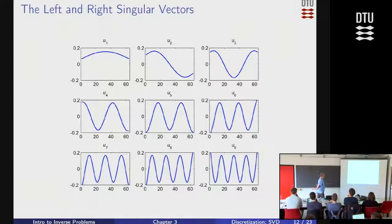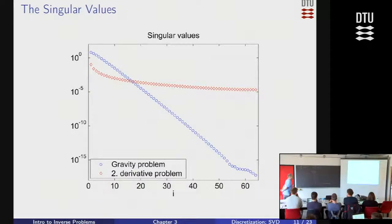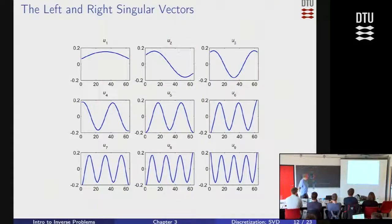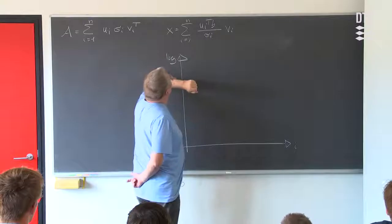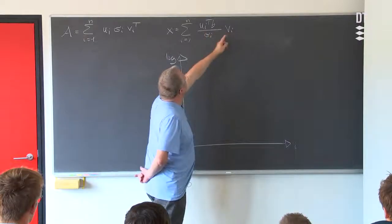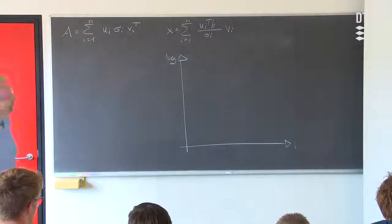As expected, the higher the index, the more oscillations. Higher index is associated with smaller singular values because they are ordered that way, illustrating once again that higher frequencies are damped more in the mapping from X to the right-hand side B, or amplified when you compute the solution. Because in that expression on the blackboard, we divide by singular values — so the smaller the singular values, the more amplification, and the higher the frequency in the U and V vectors.